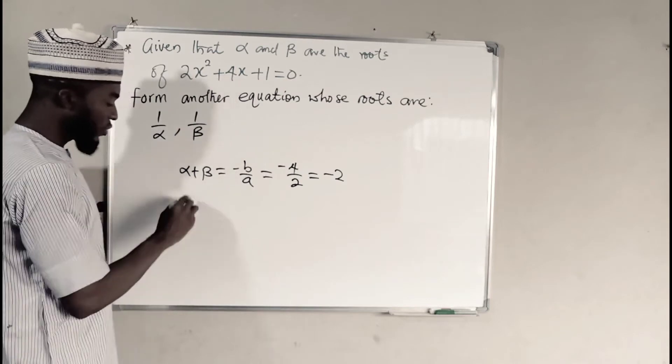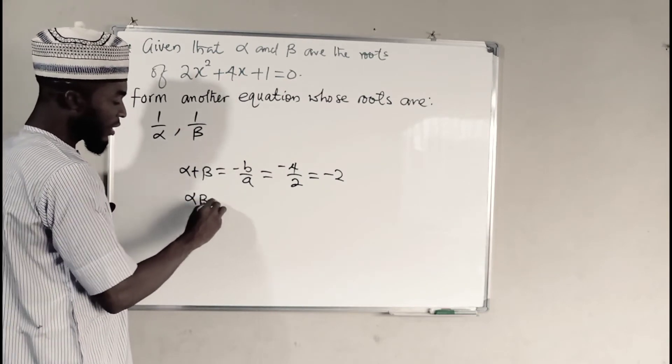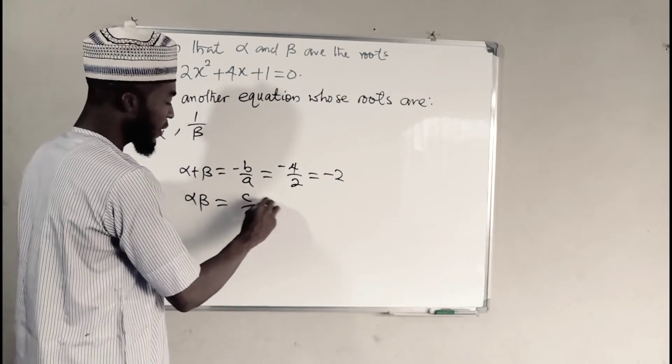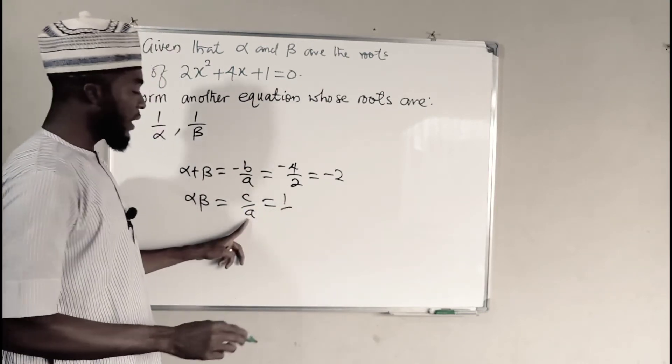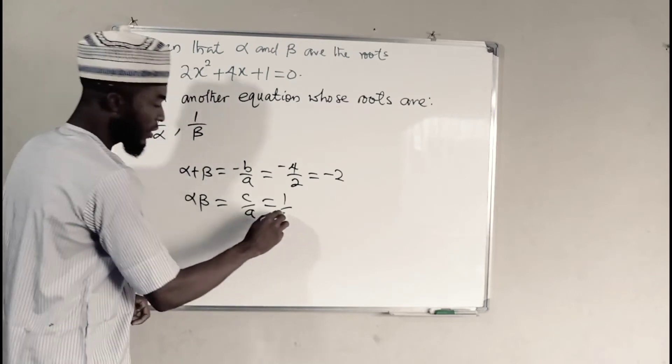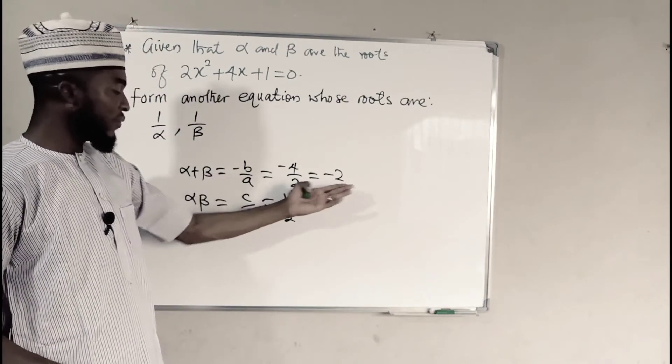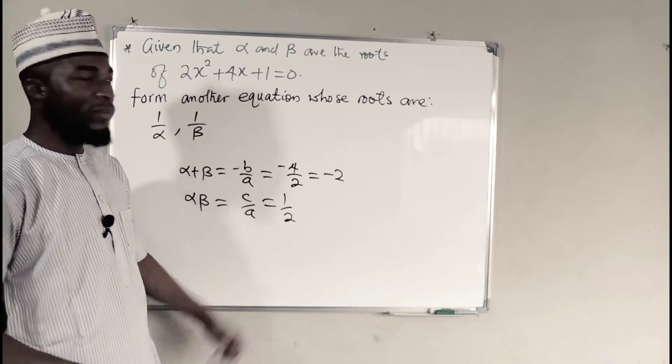Then for the product, we have alpha times beta, and this is equal to c over a. And c is the constant, which we have as 1 divided by a, and a is the leading coefficient, which is 2. So now you can see the sum of roots is negative 2, while the product of roots is 1 over 2.